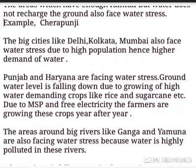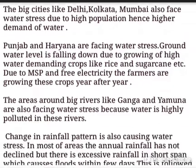Big cities like Delhi, Kolkata, and Mumbai are also facing water stress due to high population, which creates higher demand for water. Punjab and Haryana are facing water stress as groundwater levels are falling due to the growing of highly water-demanding crops like rice and sugarcane.